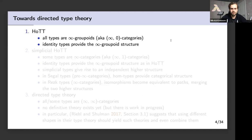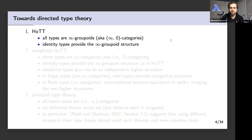Another way to put this work into context is to look at the journey towards a directed type theory. This audience is familiar with homotopy type theory, where all types can be interpreted as infinity groupoids, also known as infinity-zero-categories, and the Martin-Löf identity types provide the infinity groupoid structure for each type. In simplicial homotopy type theory — at least the one we work with in RZK — some types are infinity categories, or more precisely infinity-one-categories. We still have identity types like in HoTT, which provide the infinity groupoid structure, and in addition, we have simplicial types that give rise to an independent higher structure.